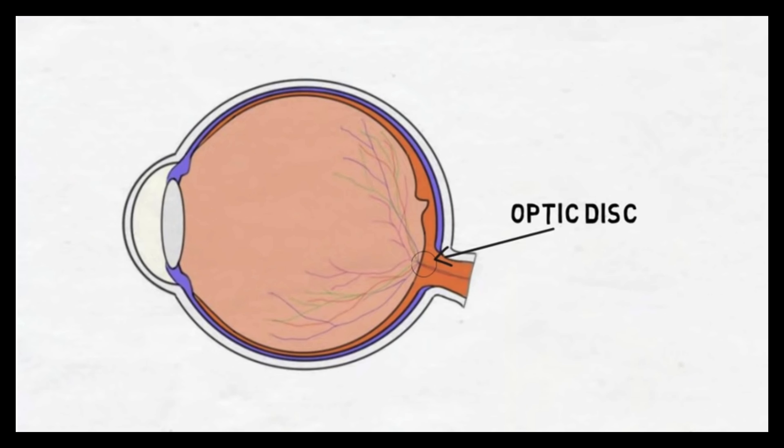However, we normally don't notice our blind spot. The brain uses information from surrounding photoreceptors and the other eye to fill in the gaps in images that are processed by the retina.